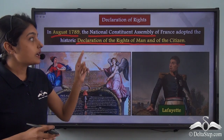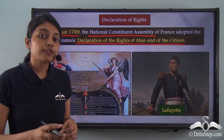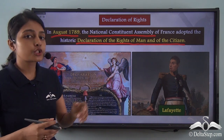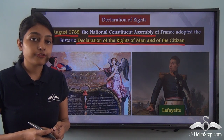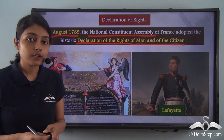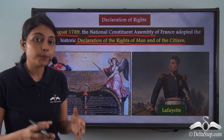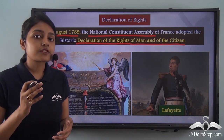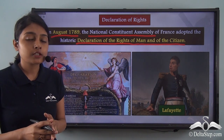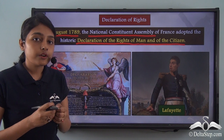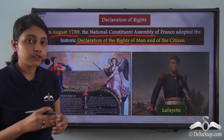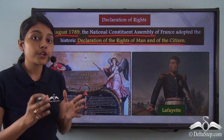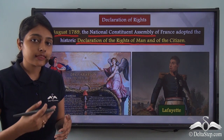This was a historic document for France and meant a great victory to the revolutionaries. This document ensured certain civil liberties for all the citizens of France. All the citizens of France would now be treated equally and get to enjoy certain civil liberties. It is for this reason that this document was a monumental success to the revolutionaries. This document also paved the way for the formation of the Constitution of the Republic of France that came later.